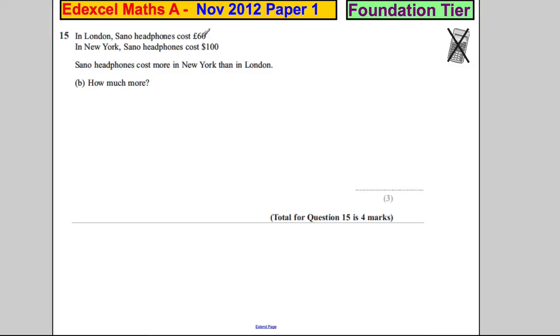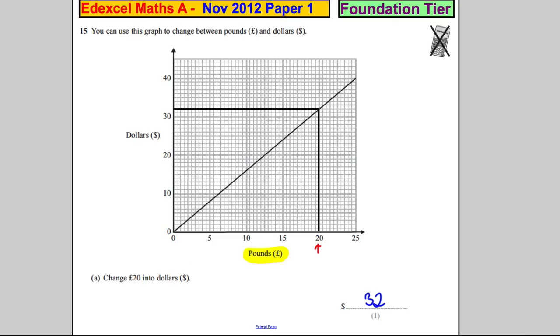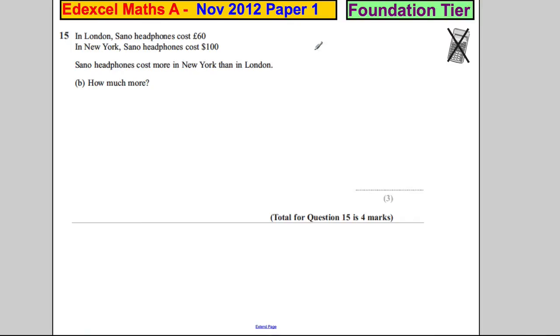So we want to convert these to both pounds or dollars. What's going to be the easiest to do? Well, we know, helpfully, use the part before, that 20 pounds is going to be $32.